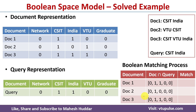Finally, we compare the query vector with each logical AND result — if both match we write yes, otherwise no. The query is 0 1 1 0 0. Document 1 logical AND result is 0 1 1 0 0 — both match, so we write yes. Document 2 result is 0 1 0 0 0 — does not match the query, so we write no. Document 3 result is 0 1 1 0 0 — matches the query, so we write yes.